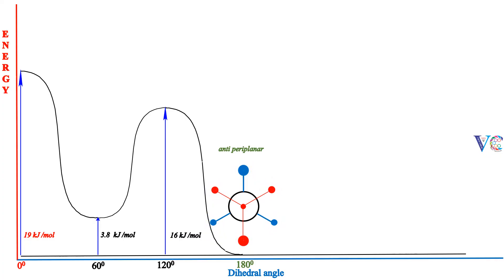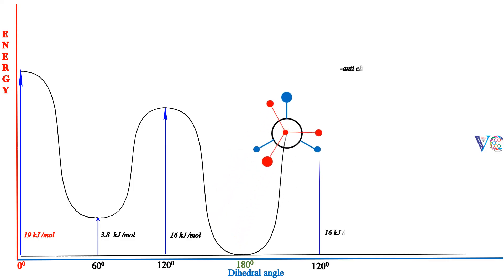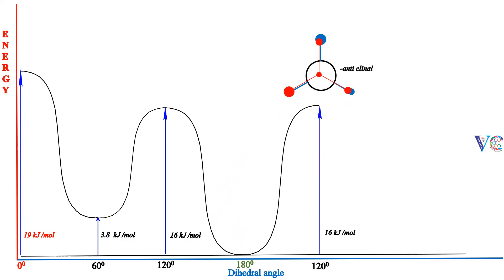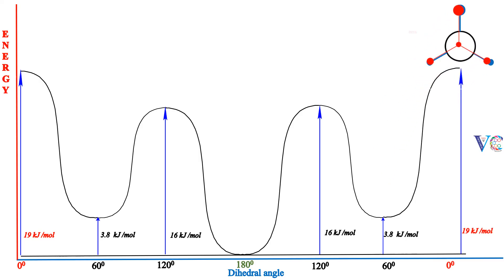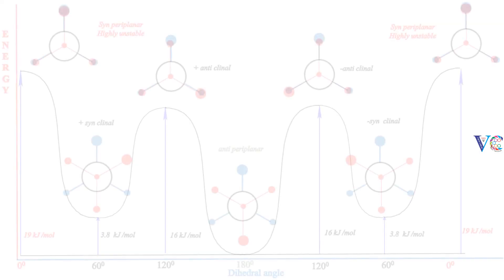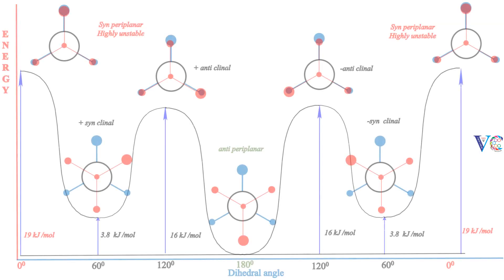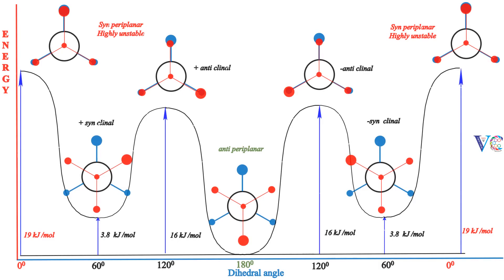Rotation of C2 in the anti-periplanar conformer by another 60 degrees gives the minus anticlinal conformer. Rotation of C2 in the minus anticlinal conformer by another 60 degrees generates the minus synclinal conformer. Finally, the rotation of C2 by another 60 degrees gives the syn-periplanar conformer. The pictorial representation of the plot of potential energy against dihedral angle of various conformers of N-butane is presented.